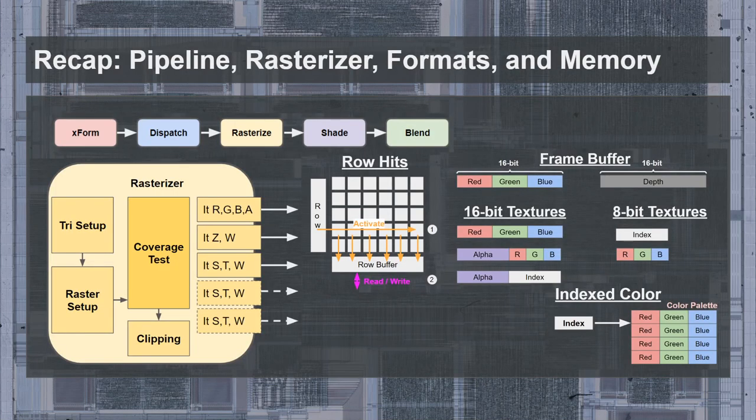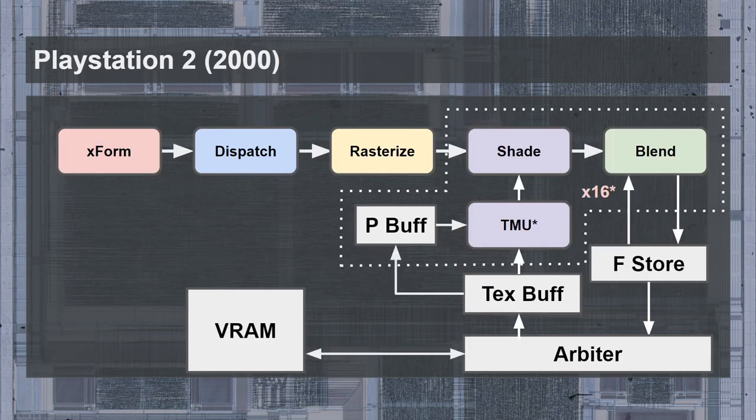Before continuing, you should try to recall some of the background knowledge from the previous videos — mainly the rendering pipeline, how the rasterizer is broken down into multiple sub-blocks, how DRAM works with rows and a row buffer, and the difference between direct and indexed color. You should also recall that when using depth buffering for a single pipeline, both a color buffer and a depth buffer are needed, resulting in an effective bandwidth of two pixel reads and two pixel writes per cycle.